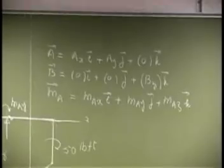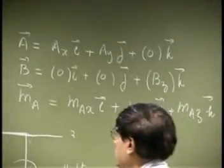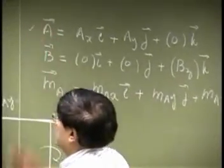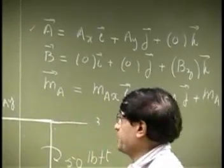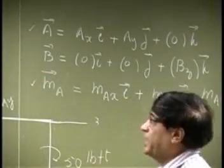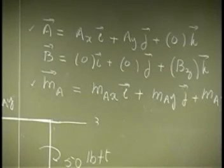Those are the unknown reactions. You have the unknown force A, that's the unknown at point A. Then you have an unknown couple which is MA. Then at B you have a force B.